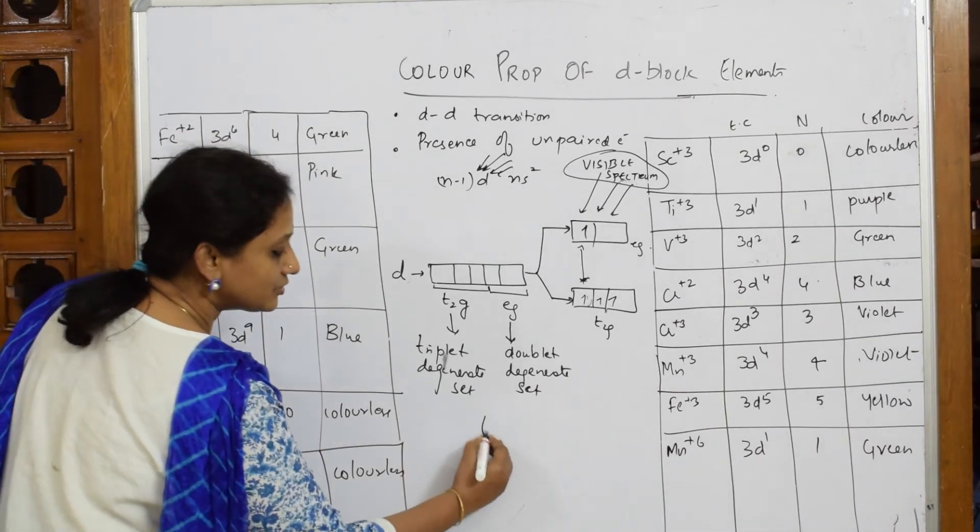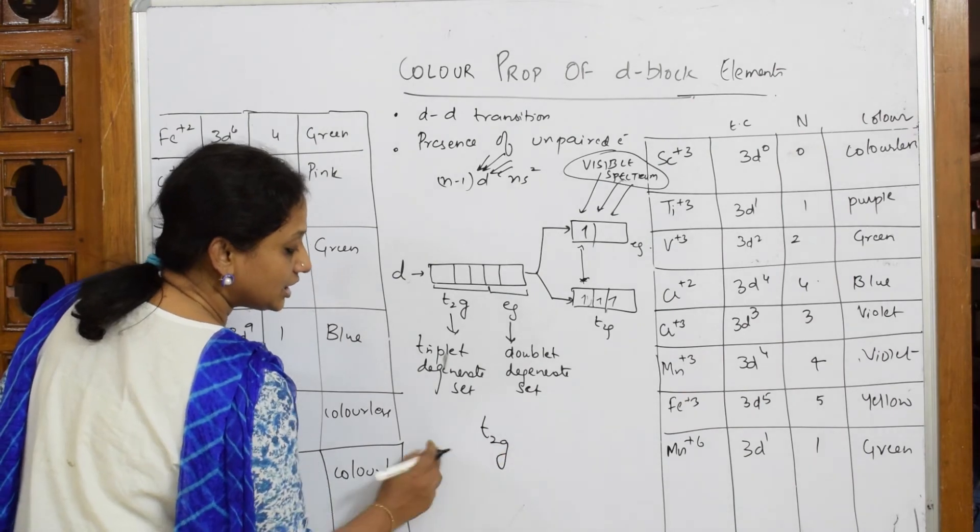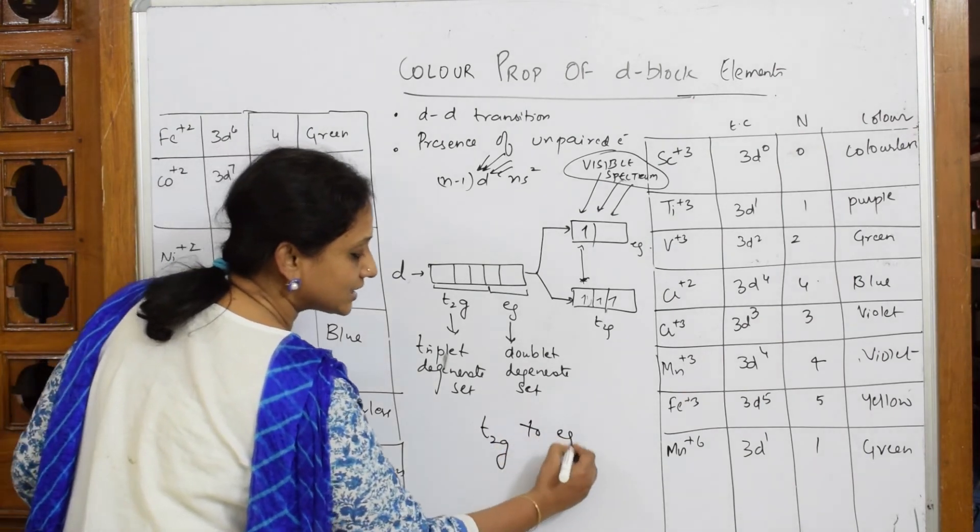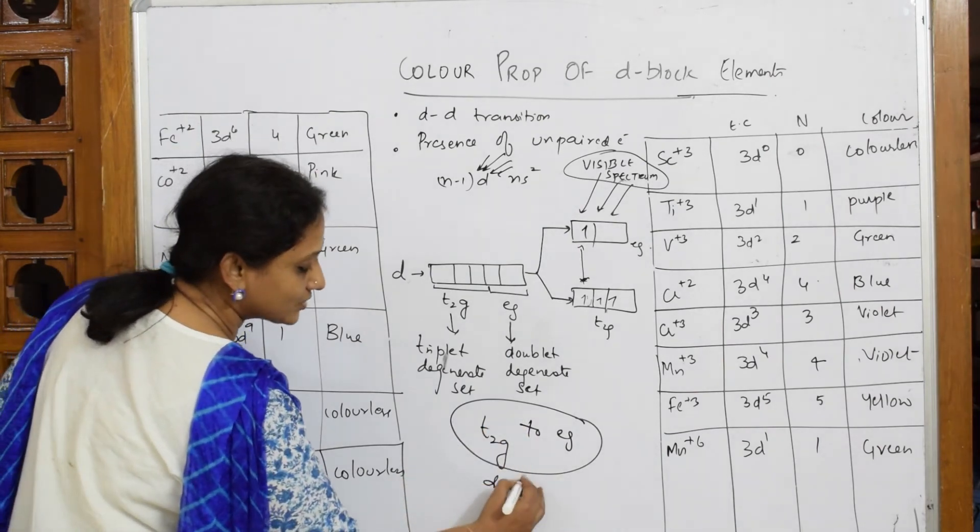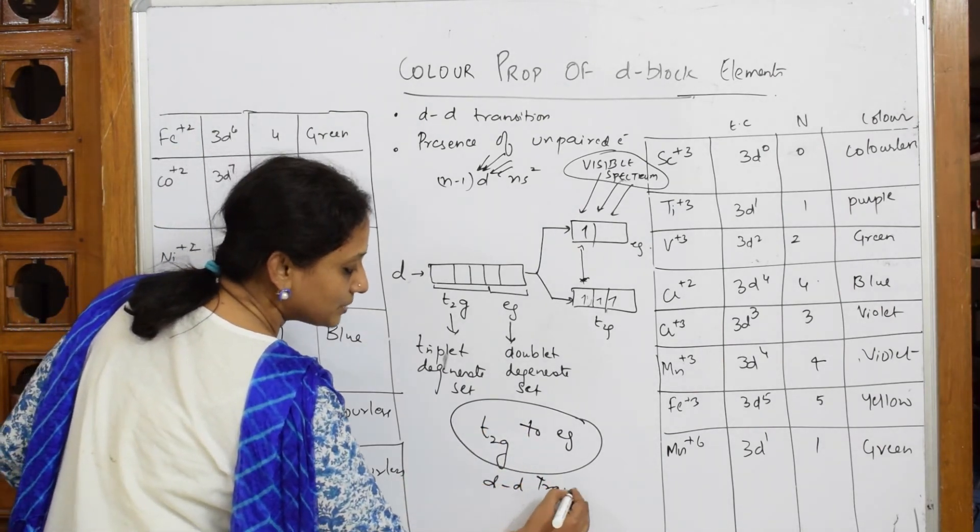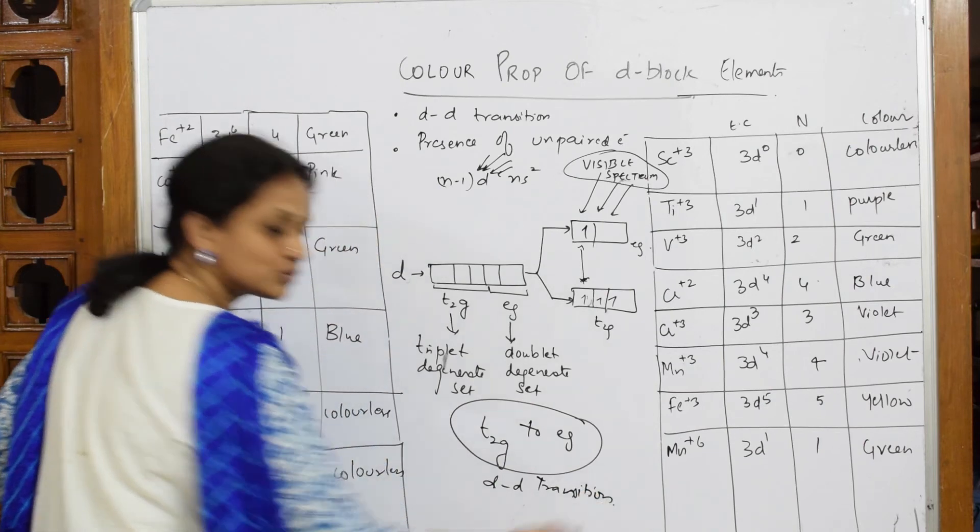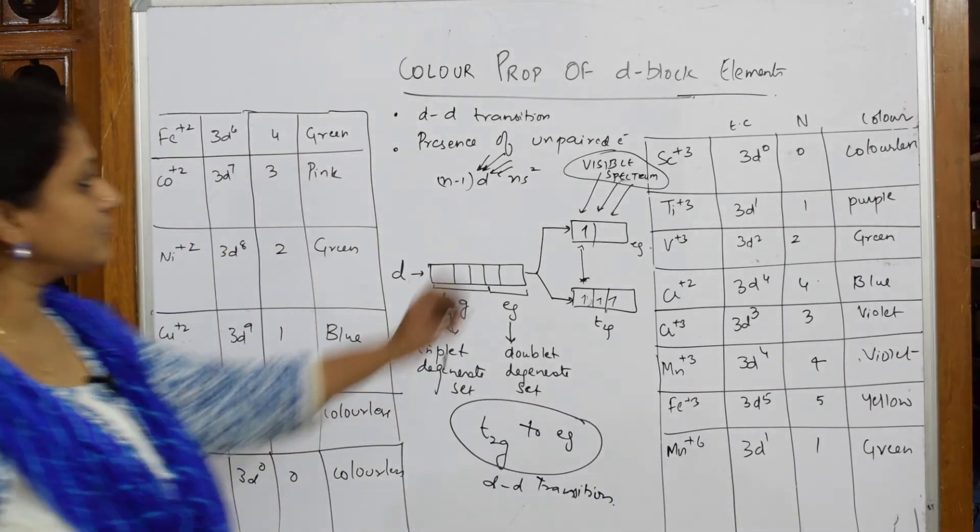The most important thing is the excitation of electrons from t2g to eg set. This transition from t2g to eg is called d-d transition, and based on this d-d transition it's going to show color.